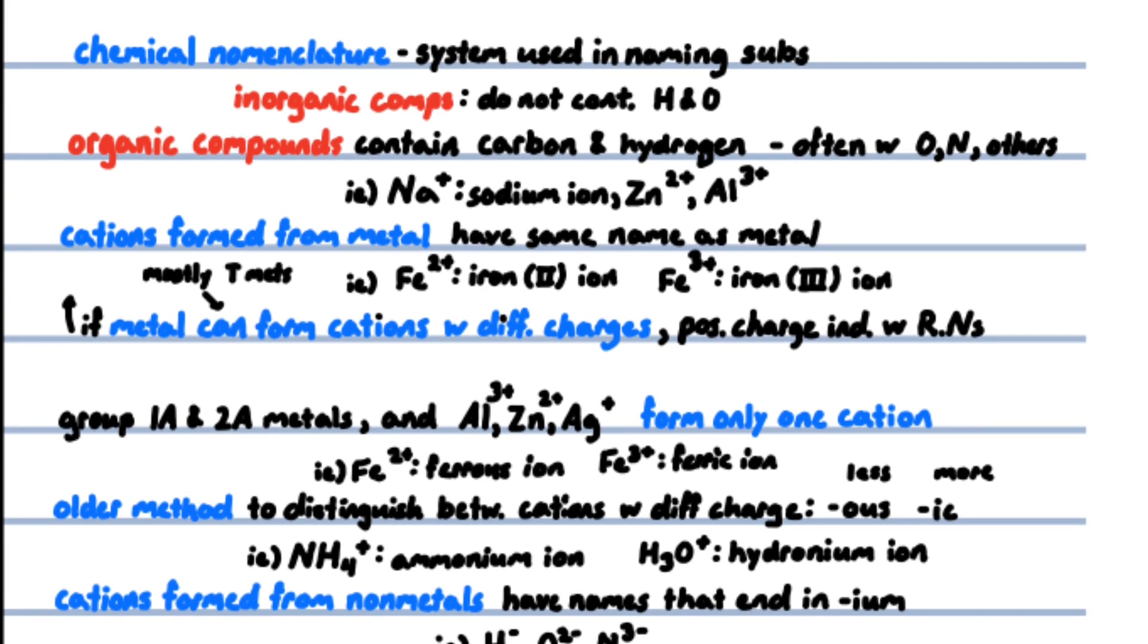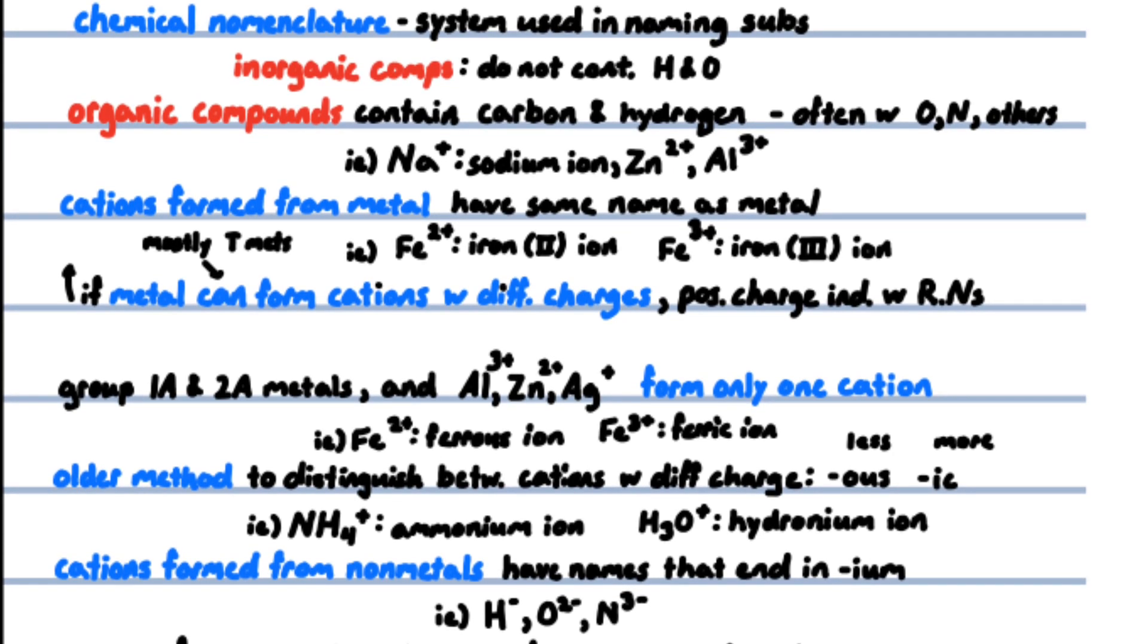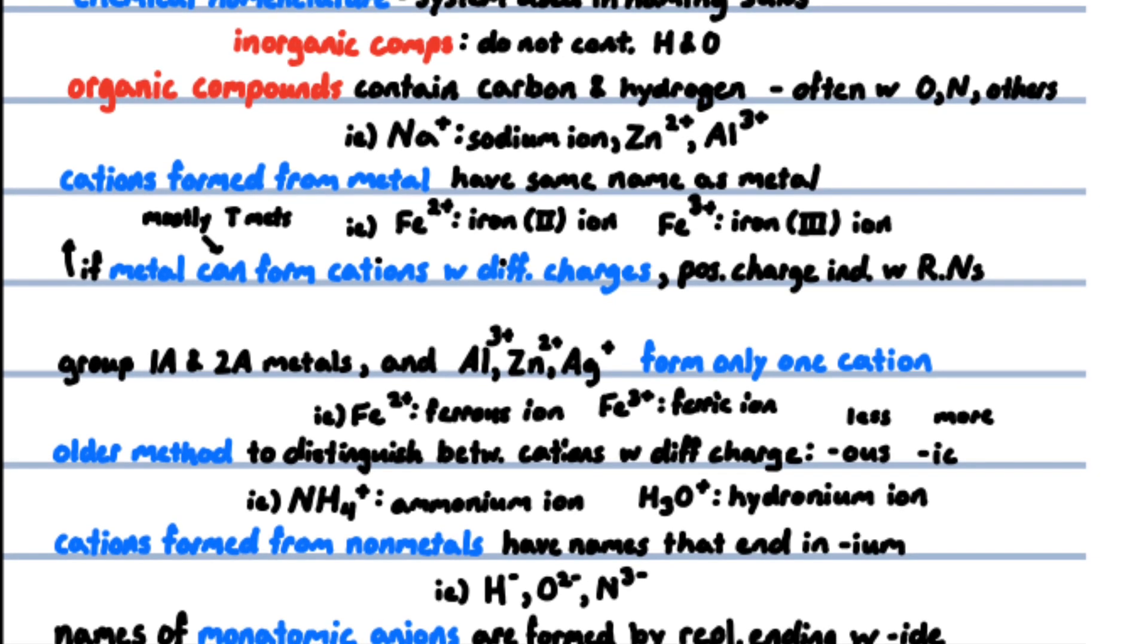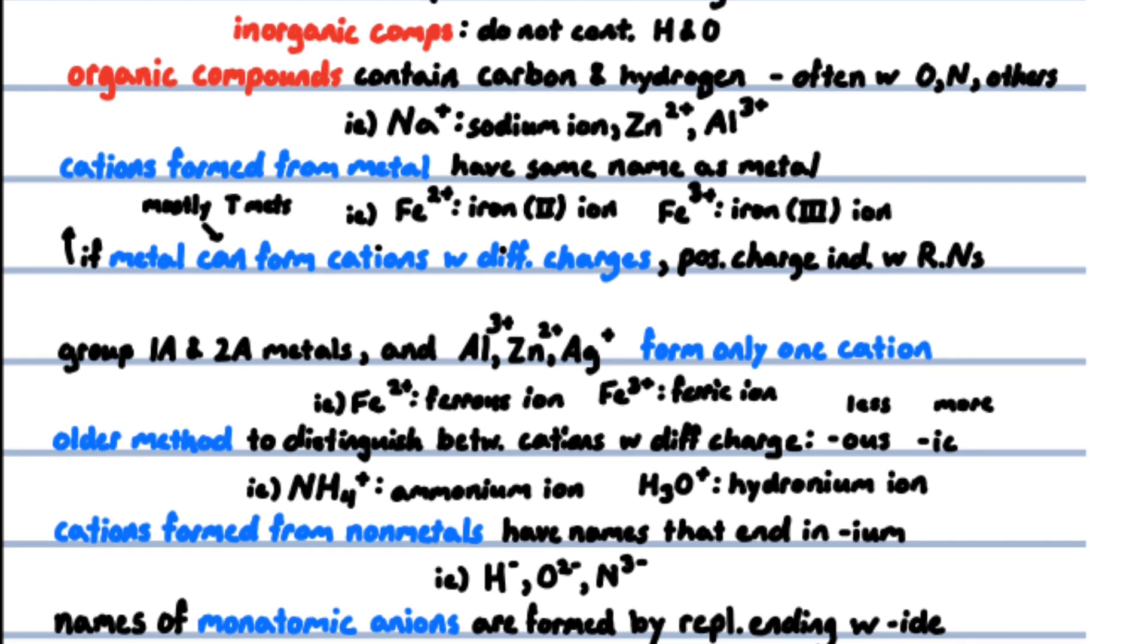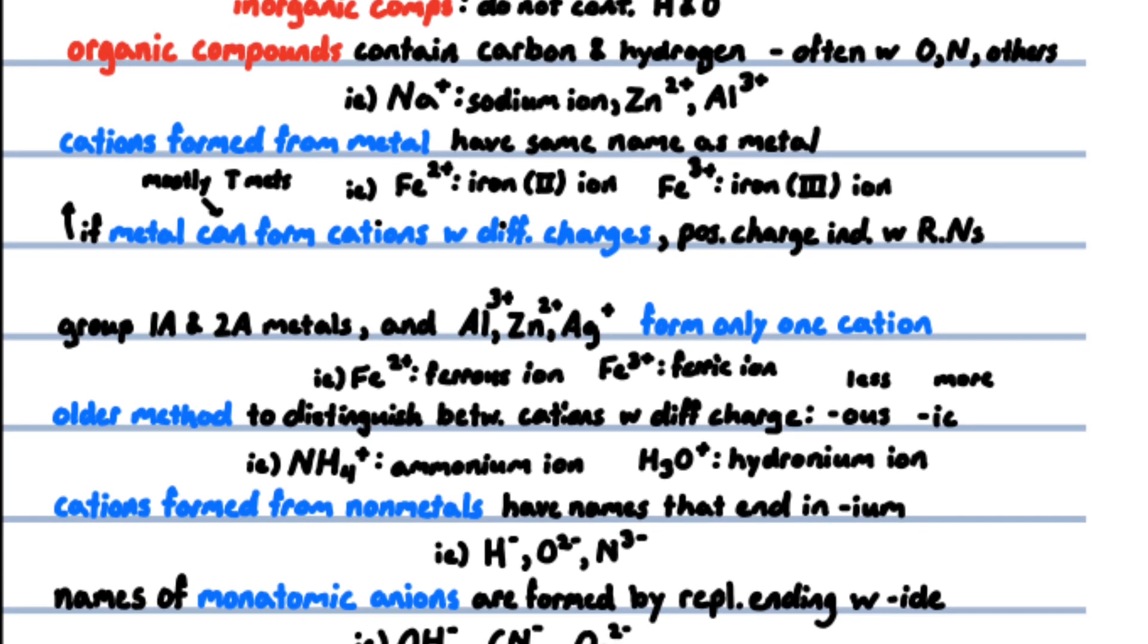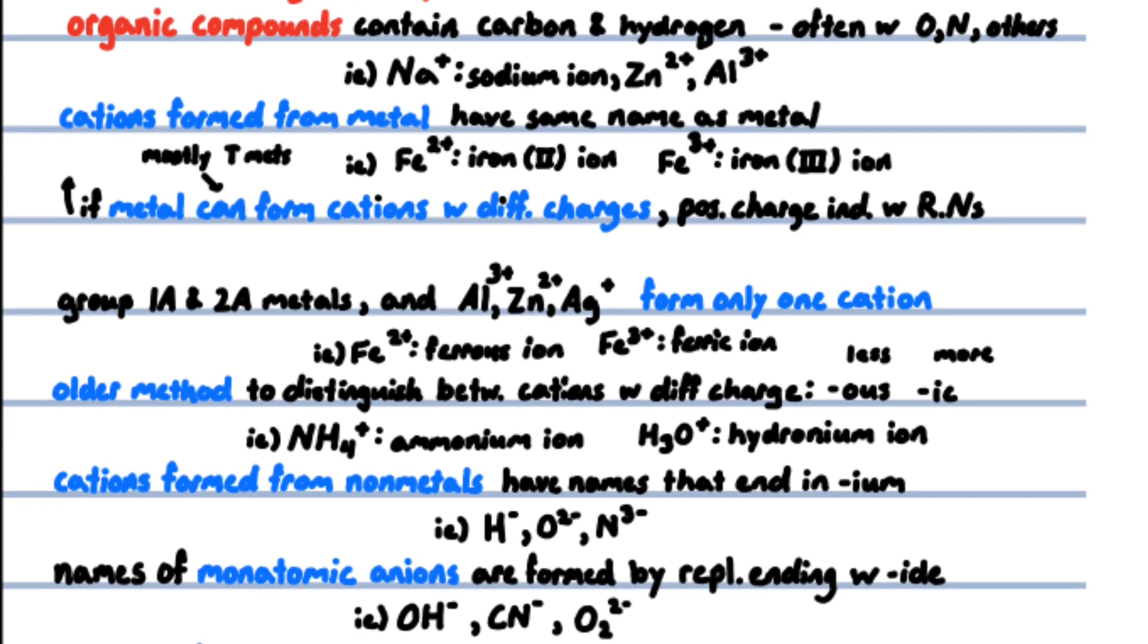Cations formed from metal atoms have the same name as the metal—for example, sodium ion, zinc ion, aluminum ion. If a metal can form cations with different charges, the positive charge is indicated by a Roman numeral in parentheses following the name of the metal—iron(II) ion and iron(III) ion. Most metals that form cations with different charges are transition metals. The metals that form only one cation are those of Group 1A and 2A, as well as aluminum, zinc, and gold.